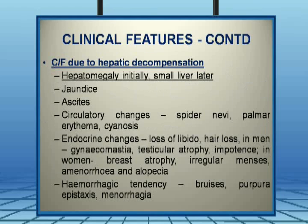Certain clinical features occur because of hepatic decompensation. Ideally it is better to diagnose the patient before decompensation, which is called compensated liver cell failure. Patients will initially have hepatomegaly — always remember a big liver first and a small shrunken liver later. The dictum of cirrhosis is a small liver. Jaundice and ascites will be present, and patients will have circulatory changes like spider nevi, palmar erythema, and at times cyanosis due to peripheral shunts.